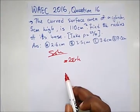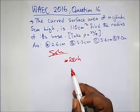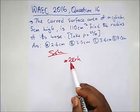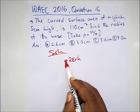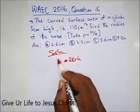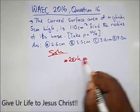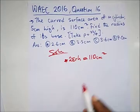So we know the curved surface area of a cylinder is equal to 2πrh. Please make sure you watch the video on introduction to solid mensuration, focusing on cylinders. This is the formula for the curved surface area of a cylinder, and they said this equals 110 centimeters squared.